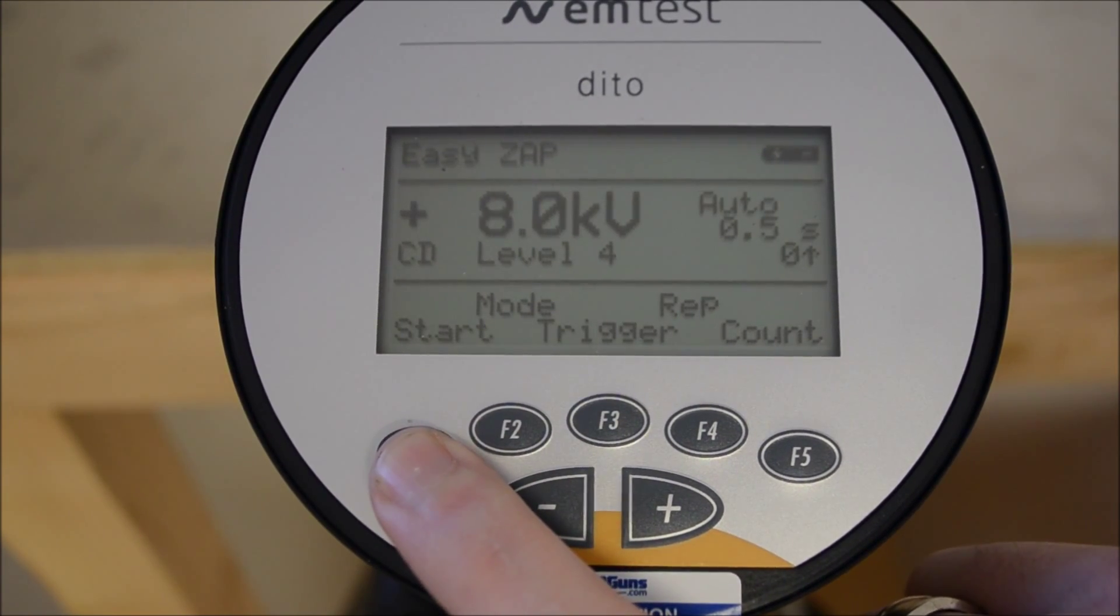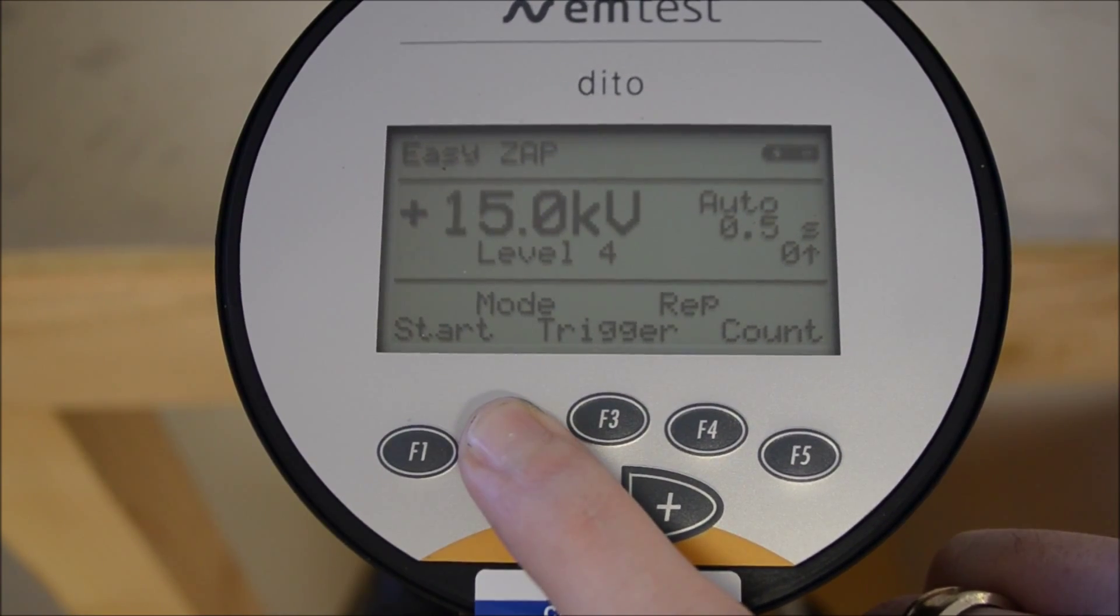In the main menu, we press F1 to enter EZZAP mode. Inside EZZAP mode, F2 allows us to toggle between air and contact mode.